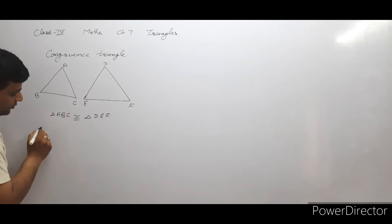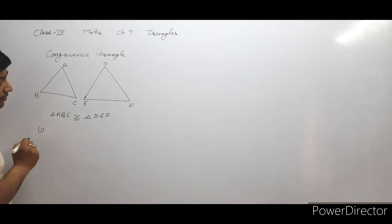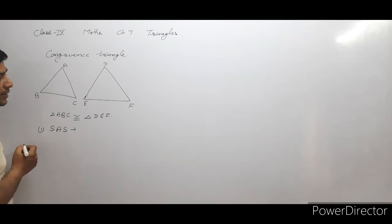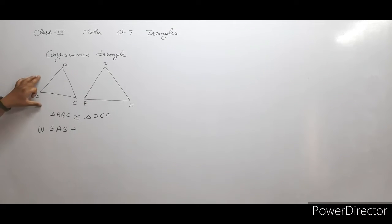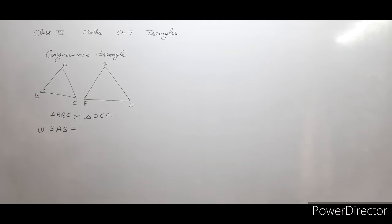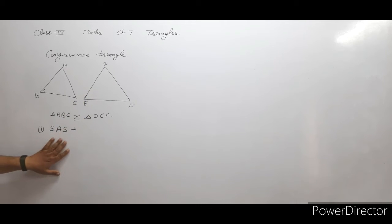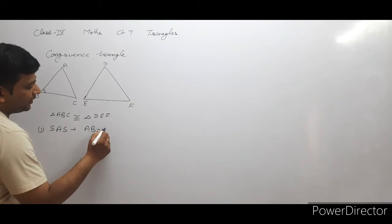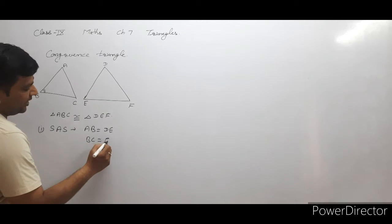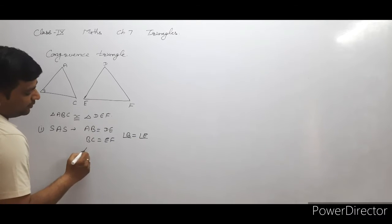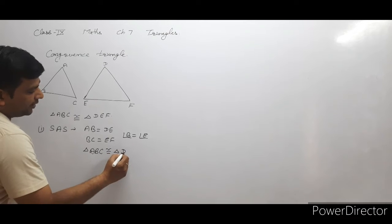We studied two criteria to prove two triangles are congruent. The first is the SAS property: if two sides and the included angle of one triangle are equal to two sides and the included angle of another triangle, then the two triangles are congruent. For example, if AB equals DE, BC equals EF, and angle B equals angle E, then by SAS, triangle ABC is congruent to triangle DEF.